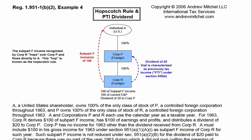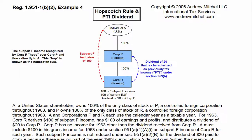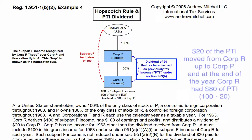As a result of the $100 of subpart F income, Corp. R generated $100 of previously taxed income, or PTI. Since Corp. R paid a dividend of $20 to Corp. P during the year, $20 of the PTI moved from Corp. R up to Corp. P, and at the end of the year, Corp. R had $80 of PTI.